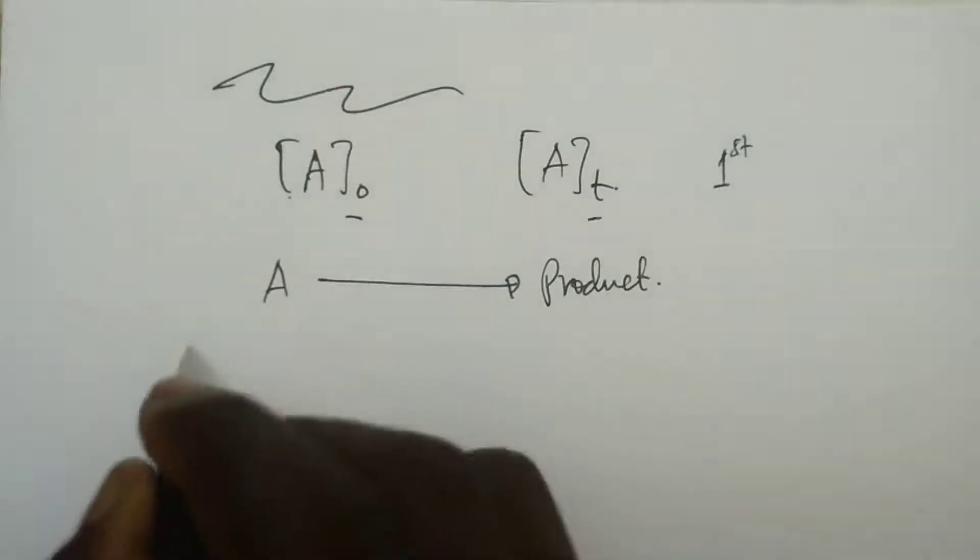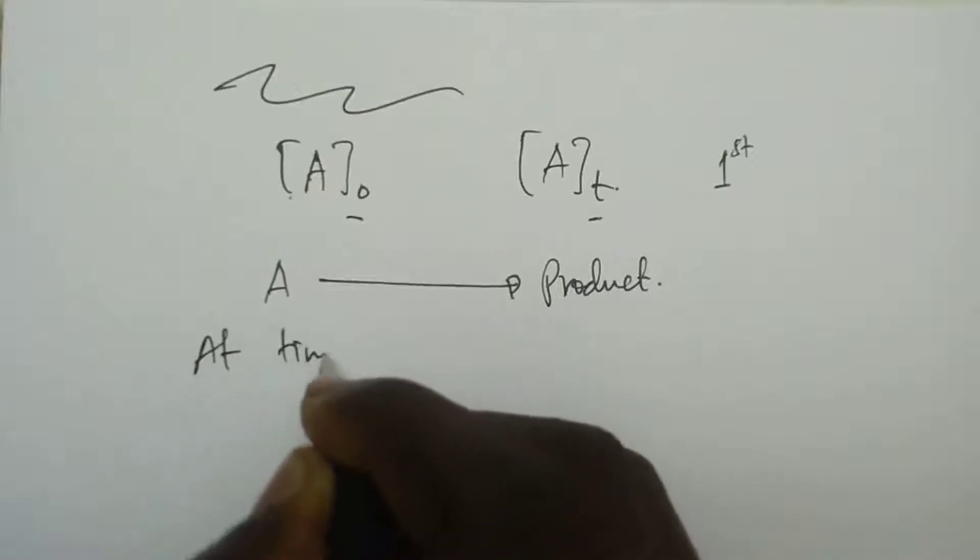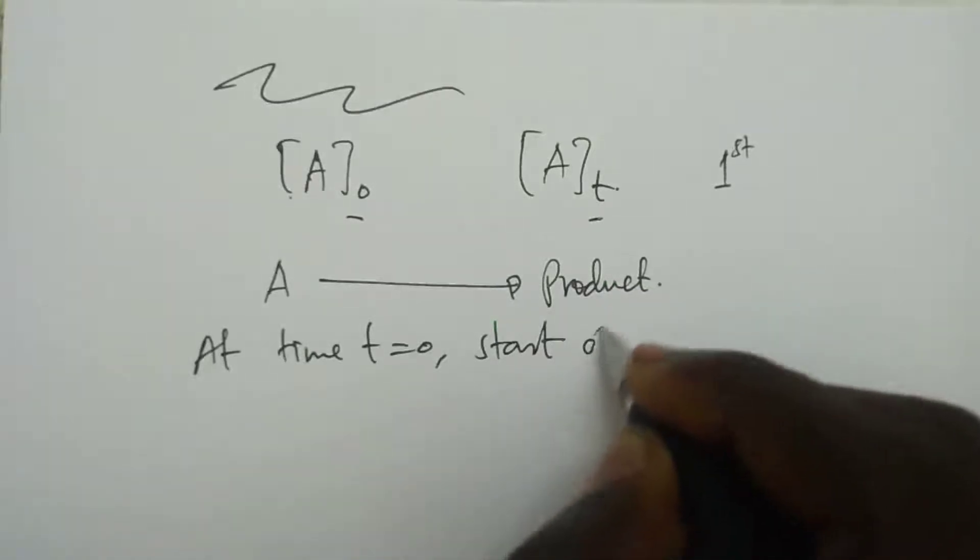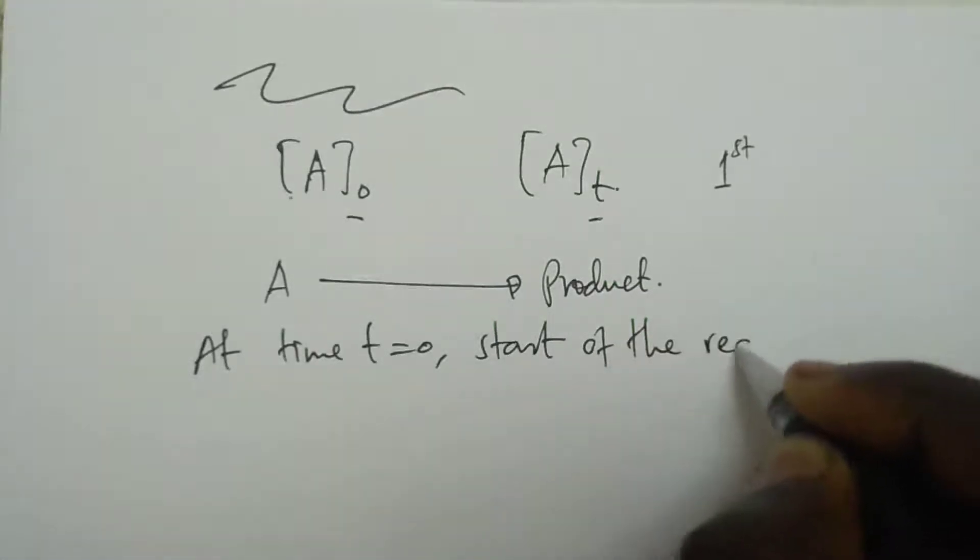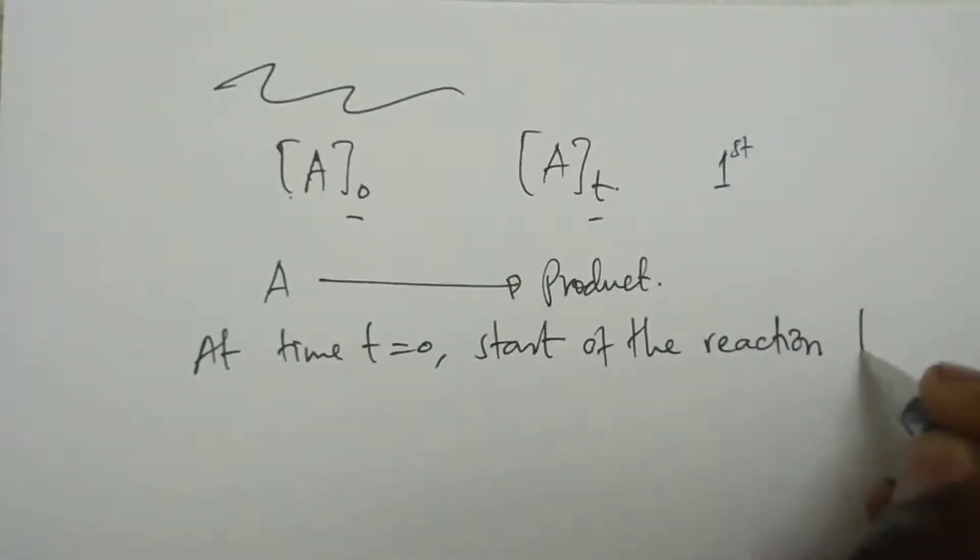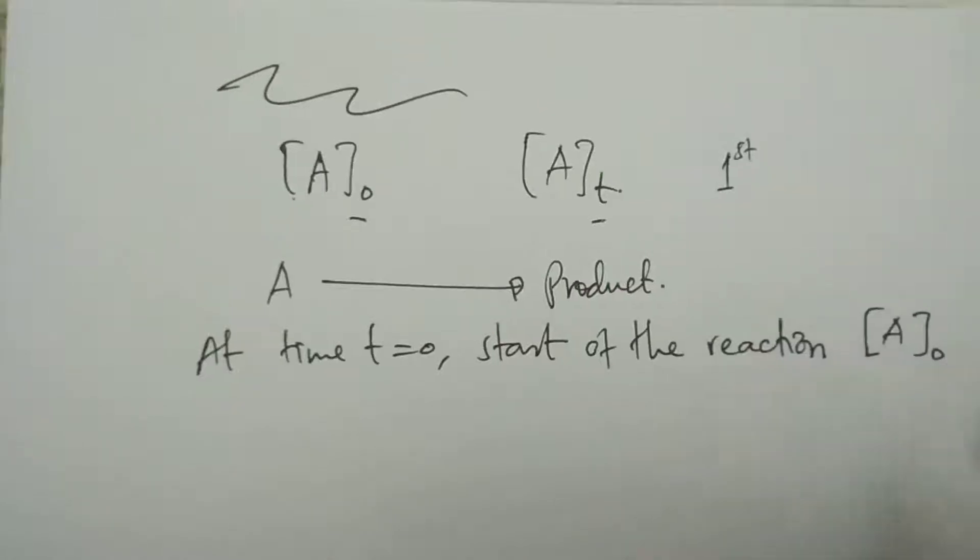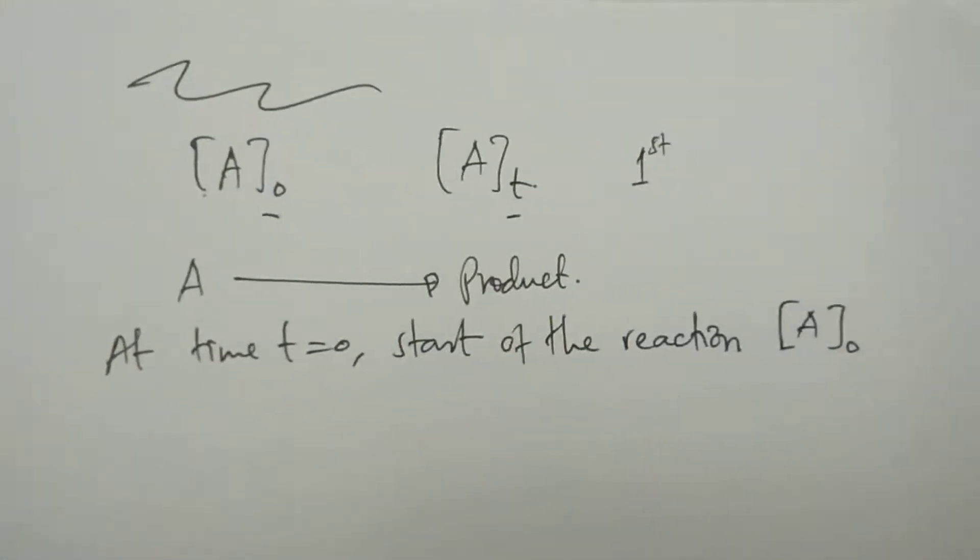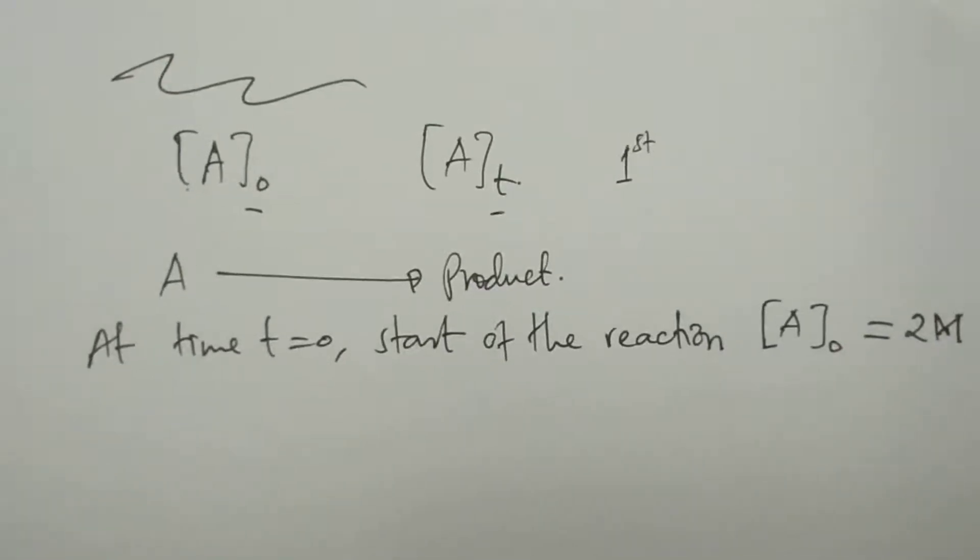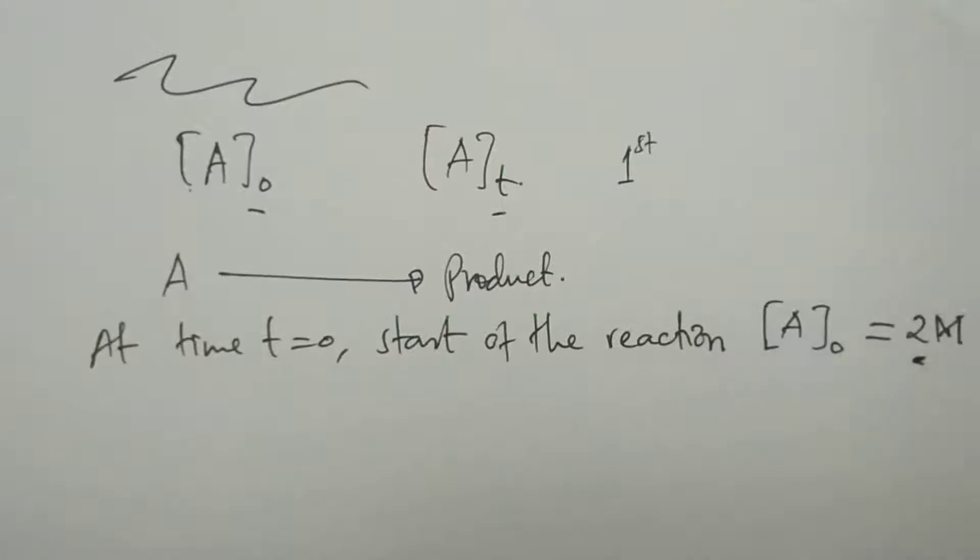Before going to discuss maybe the integrated equation for zero order or first order, let me just explain when you are talking of A₀ and when you are talking of Aₜ, what does it mean? Let's assume we have a reaction with reactant A reacting to form a product. So what happens is that at time t equals zero, that means start of the reaction, when the reaction is starting, we have a concentration that we call concentration A₀. Now, in this perspective, let us assume this concentration to be maybe 2M. As the reaction proceeds, this concentration will tend to decrease.